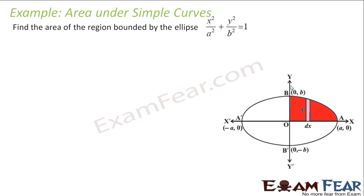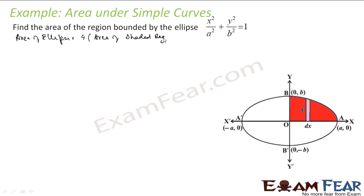Here also I will use both approaches. The first approach: I will take this small quadrant and say the area of the ellipse is nothing but 4 times the area of the shaded region, because by symmetry they are four equal parts. I will take a small vertical rectangle, and the area is the integration of y·dx, where x is varying from 0 to a.